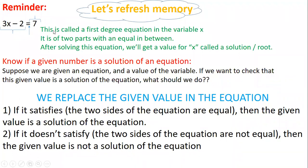This is called a first-degree equation in the variable x. As Sarah said, 3x minus 2 equals 7 is called a first-degree equation. What do I mean by first-degree equation in the variable x? The variable in this equation is x.